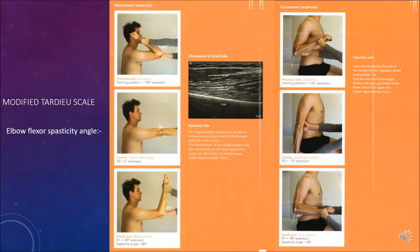When treating elbow flexors with botulinum toxin, inject a bigger volume into brachialis and lesser into biceps, because nullifying biceps' supination action would cause the forearm to go into pronation. It is always important to understand functional anatomy — which muscle does which action — before injecting.